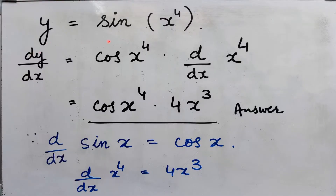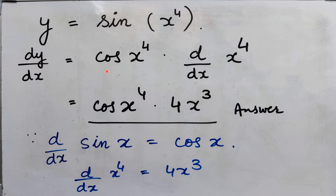Let y equal sin(x⁴). Now differentiate both sides with respect to x. We get dy/dx equal to — here we take the formula: the derivative of sin(x) is cos(x). So sin(x⁴) will become cos(x⁴). In this formula, wherever x is written, you substitute x by x⁴. So sin(x⁴) will become cos(x⁴) multiplied by whatever is in the bracket, which gets differentiated again by the chain rule.